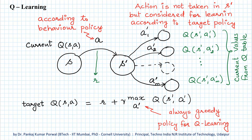In Q-Learning, when the agent is in state S and it takes action A, it receives an immediate reward R and transitions into state S'. Once in state S', the agent knows all the actions available in S', and it will also know the Q-values for all the state-action pairs in state S' from the current values in the Q-Table.